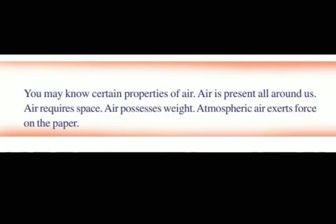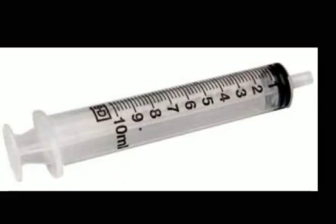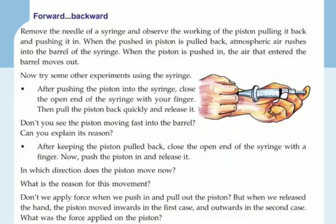Now, under the topic 'forward and backward', take a syringe. Remove the needle part of the syringe. Then you can observe the working of the piston by pulling it back and pushing it in. When the piston is pulled back, air rushes into the barrel of the syringe.